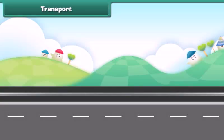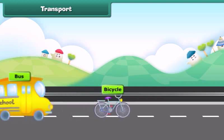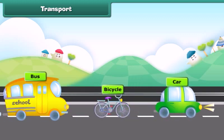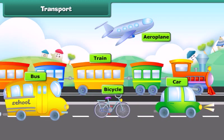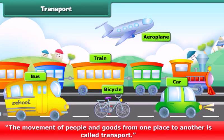Dear friends, we all go from one place to another by different vehicles like bicycle, bus, car, train and airplane. The movement of people and goods from one place to another is called transport.